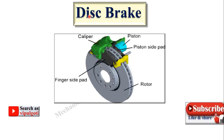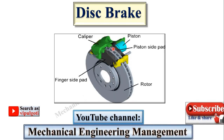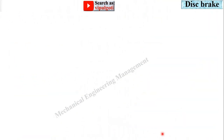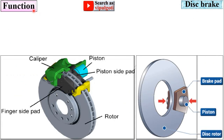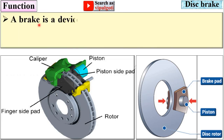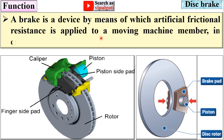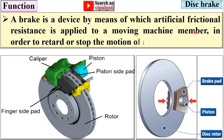Today I am going to discuss disc brakes. Welcome to my YouTube channel, Mechanical Engineering Management. Let's start with the function of the brake. A brake is a device by means of which artificial frictional resistance is applied to a moving machine member in order to retard or stop the motion of a machine.